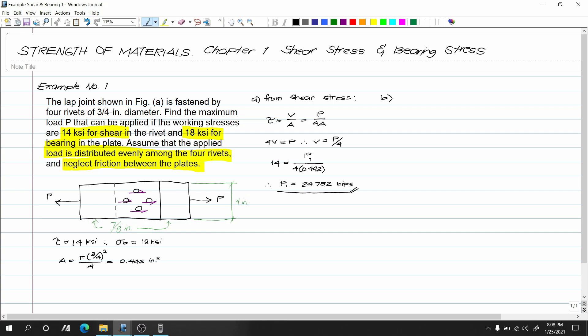Letter B: From bearing stress. The bearing stress equals Pb/Ab, where Pb is equivalent to P because we neglect friction between the plates. Then we need Ab, which equals d times t. The diameter of our rivet is 3/4, and the thickness is 7/8. So that equals 0.656 inch squared.